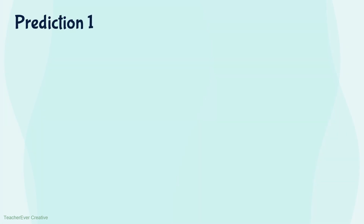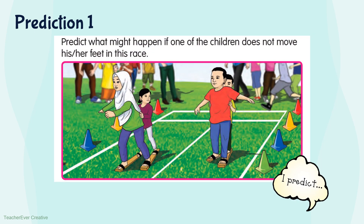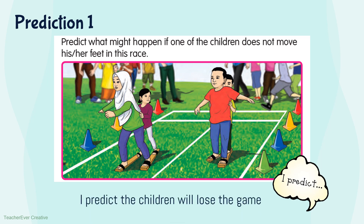Let's make prediction one. Observe the picture. Predict what might happen if one of the children does not move his or her feet in the race. You can say that I predict the children will lose the game if they do not move their feet during the race.